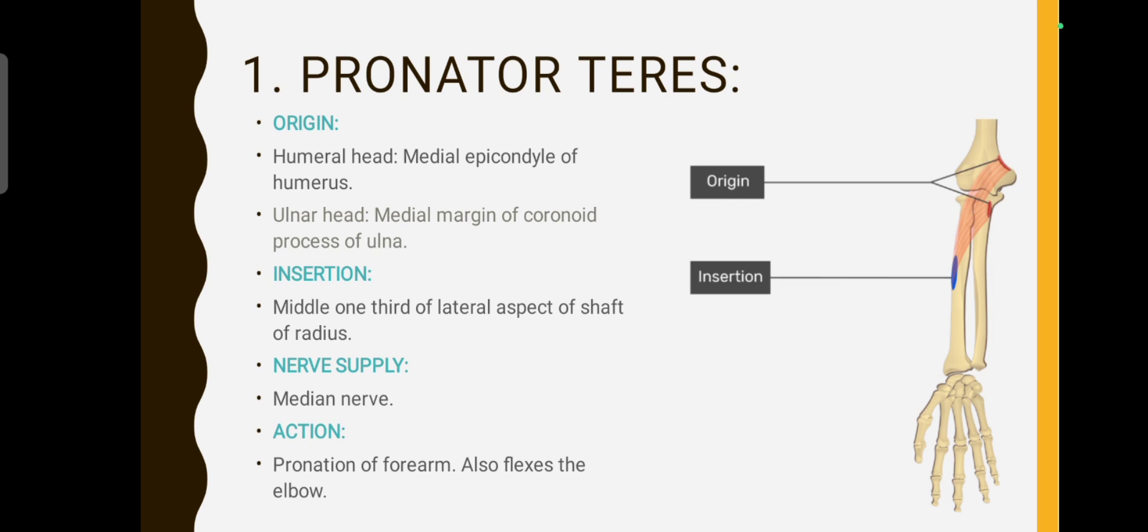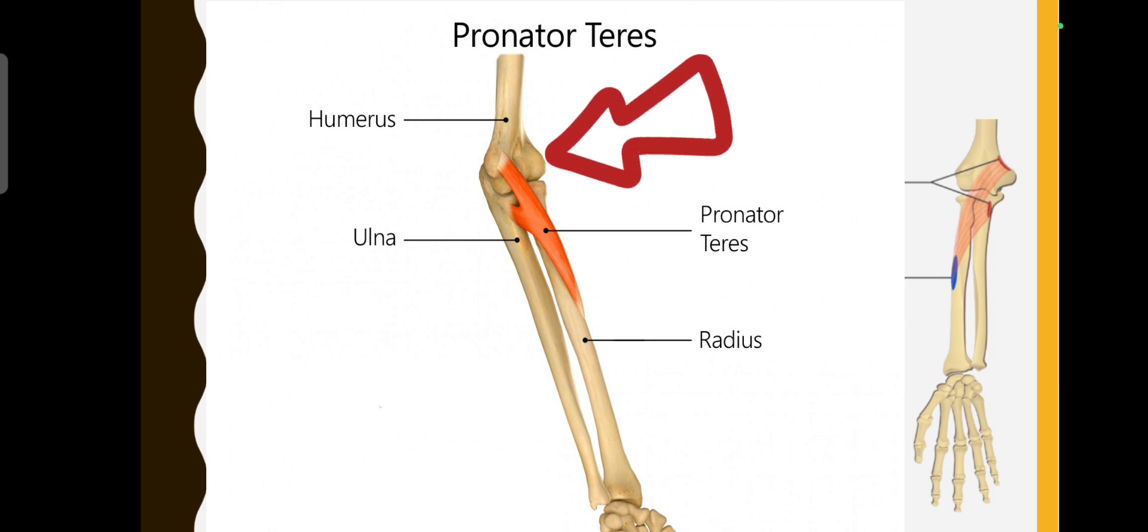Pronator teres has two heads: humeral head and ulnar head. As the head names show, the humeral head originates from the medial epicondyle of the humerus, and the ulnar head originates from the medial margin of the coronoid process of the ulna.